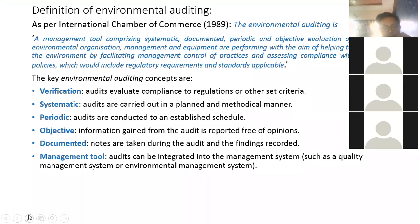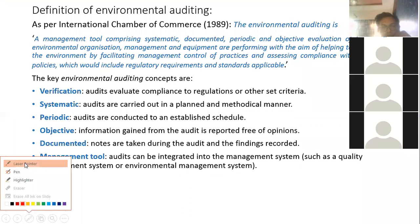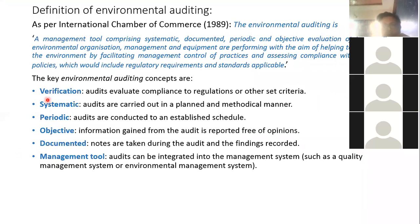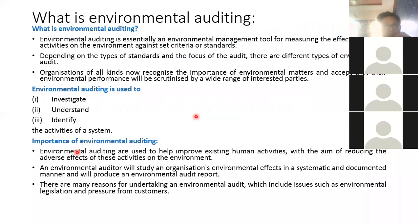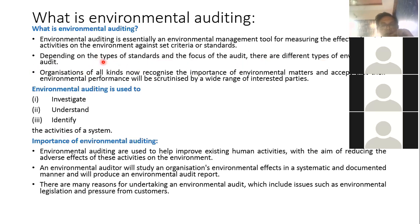In the last class I have already given the definition of environmental auditing. So what is environmental auditing? It is an essential environmental management tool for measuring the effect of certain activities on the environment against set criteria or standards. Depending on the type of standards or focus of the audit, there are different types of environmental audits.